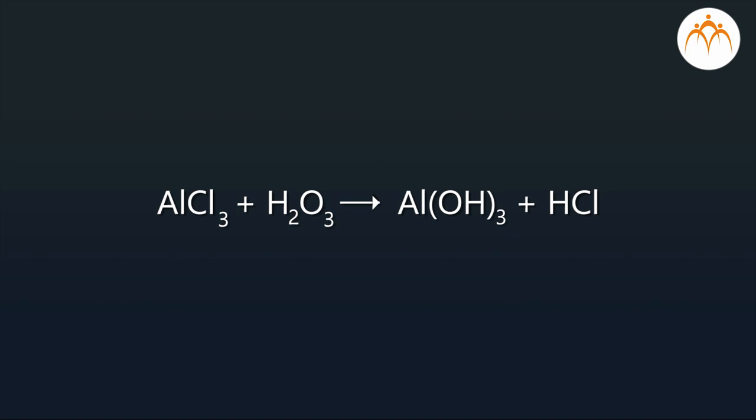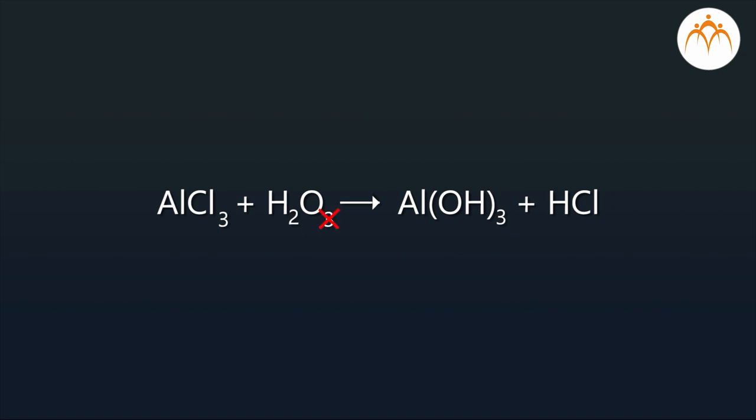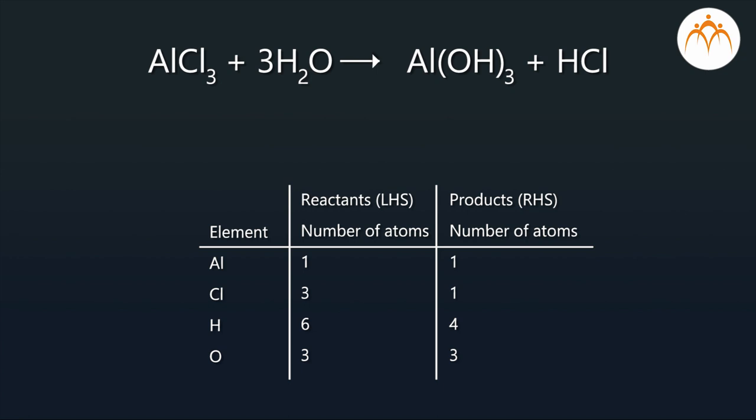So the formula of H2O cannot be changed to H2O3. Instead, a coefficient of three will have to be written before H2O, such as AlCl3 plus 3H2O gives Al(OH)3 plus HCl.